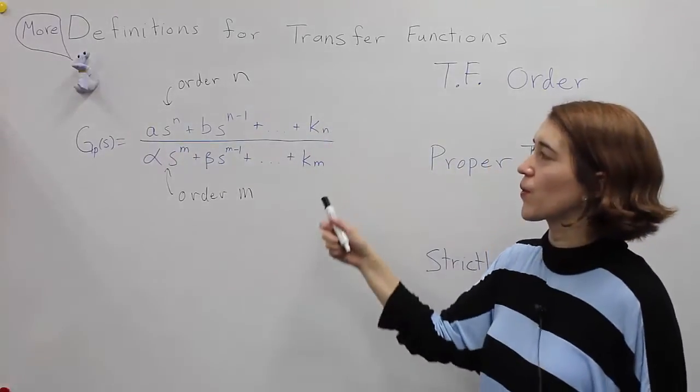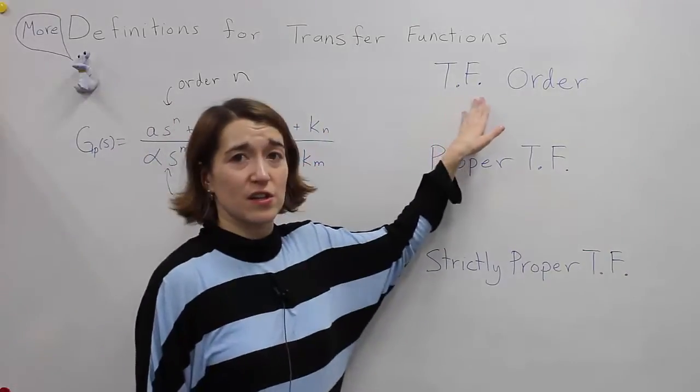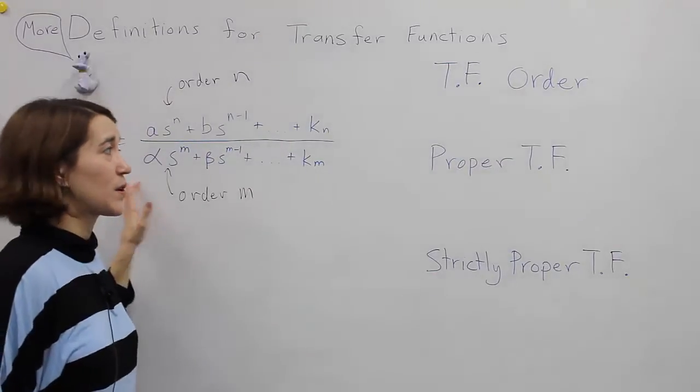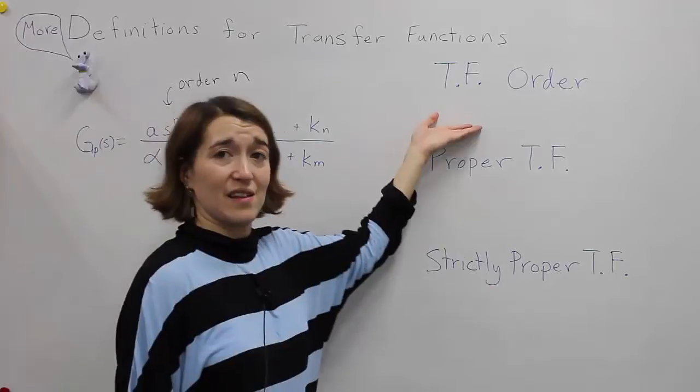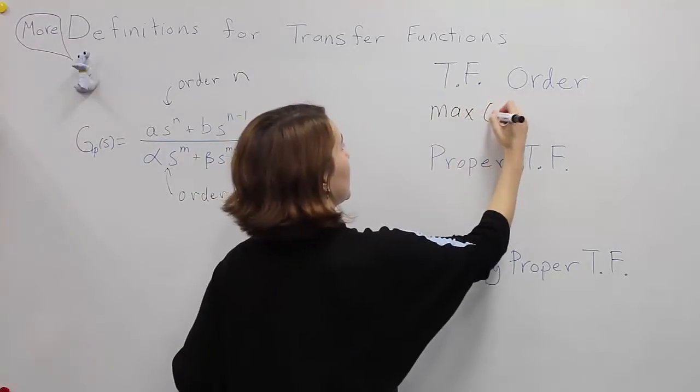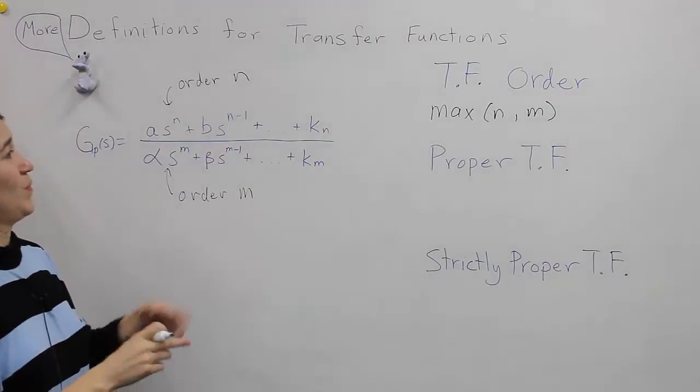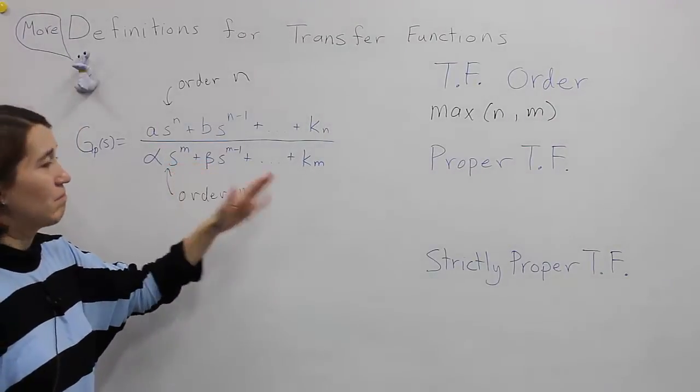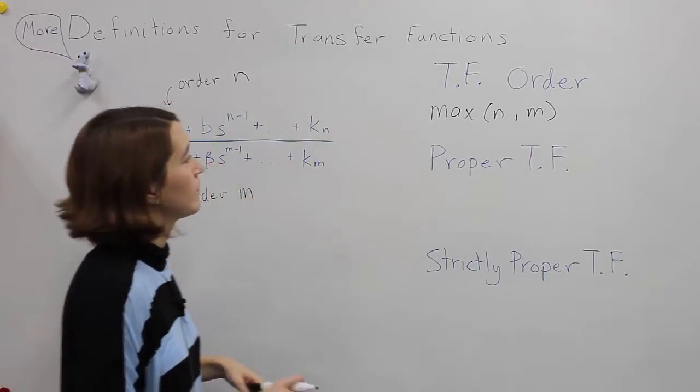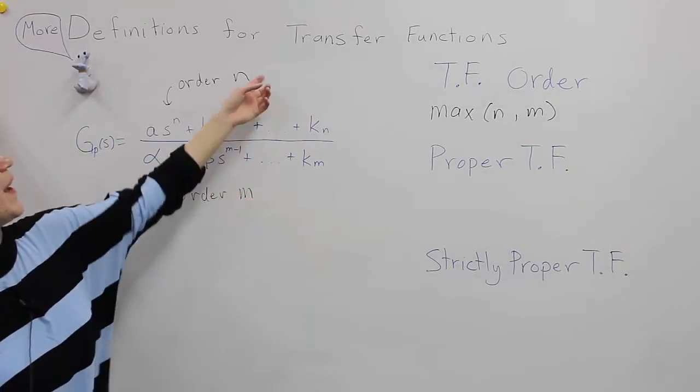So what about the total order of the transfer function itself? For the transfer function order, we look at the two orders, the numerator and the denominator, and whichever one is larger, that is the order of the transfer function. So simply take the maximum of n and m. If they're the same, that's your transfer function order. Pretty simple. So if m were two and n were one, your transfer function order would be two. And we'll very commonly work with second order transfer functions, which means m is two, and usually n is lower.